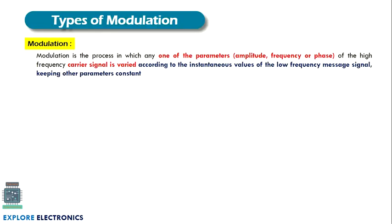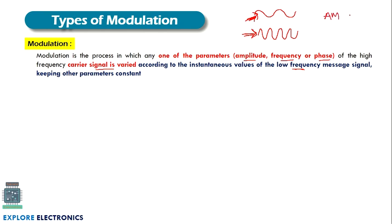Now let us see the different types of modulation techniques. Modulation is a process in which any one of the parameters — amplitude, frequency, or phase — of a high frequency carrier signal is varied in accordance with the instantaneous value of the low frequency message signal. For AM, we keep frequency and phase constant and vary only amplitude. For FM, we vary the frequency while keeping amplitude and phase constant.